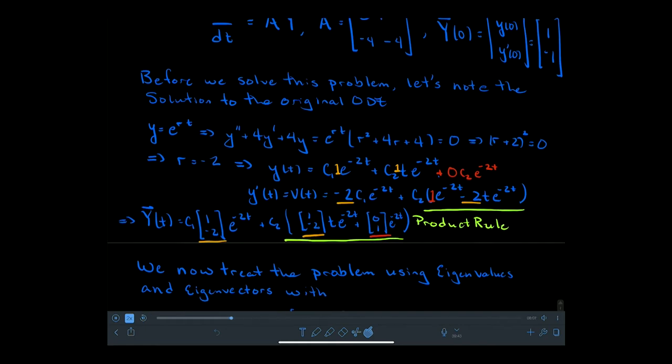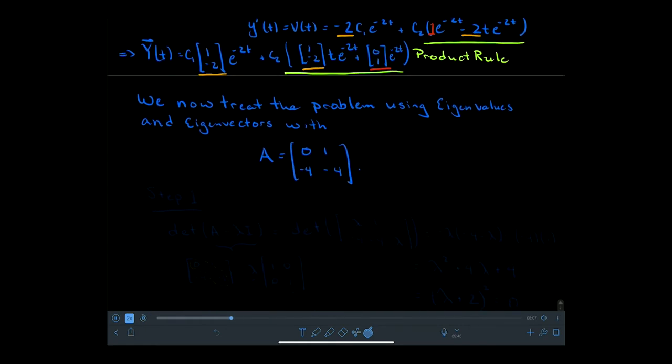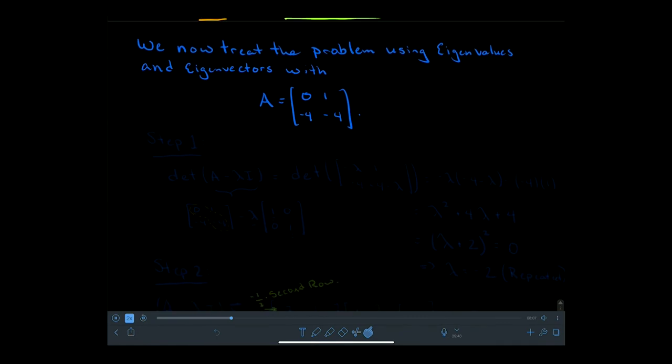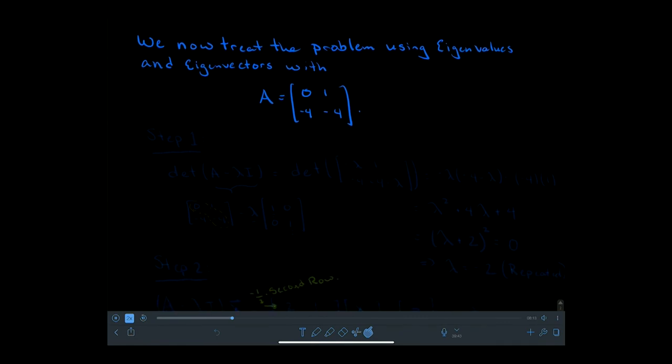Now we're going to treat this problem using eigenvalues and eigenvectors. We want to remember that we've found the solution through the scalar problem, and something interesting happened because of the product rule. Now we take that to its conclusion through the language of eigenvalues and eigenvectors. We have our A matrix, so we begin with the steps.